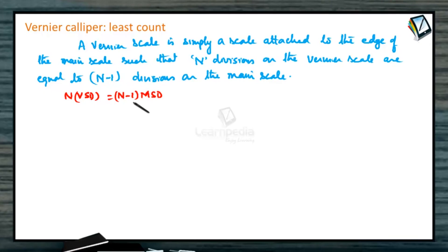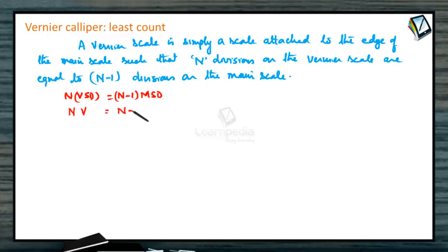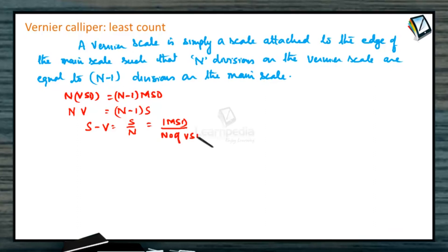Let the value of 1 main scale division be S, and 1 vernier scale division be V. We can write: (n − 1)S = n × V. The least count equals the magnitude of the smallest division on the main scale divided by the total number of divisions on the vernier. So we can write S − V = S/n.